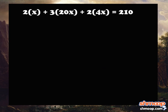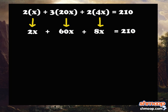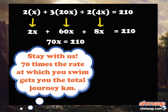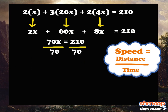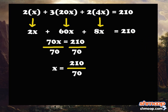When we simplify the equation, we get 2X + 60X + 8X = 210, so 70X = 210. Divide 70 from both sides, and we see that X is equivalent to 3 kilometers per hour.